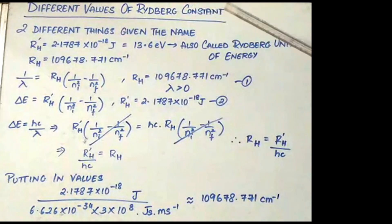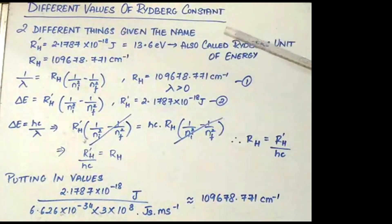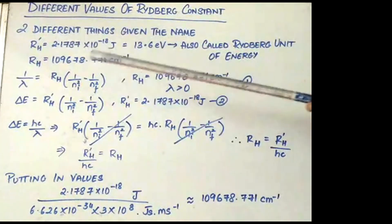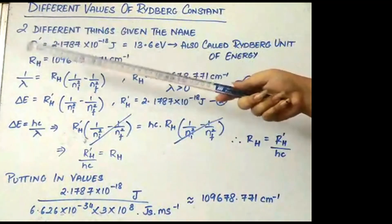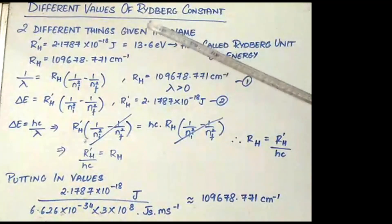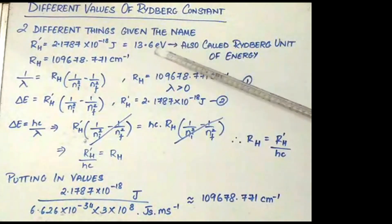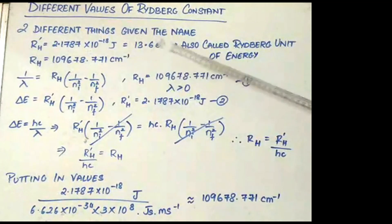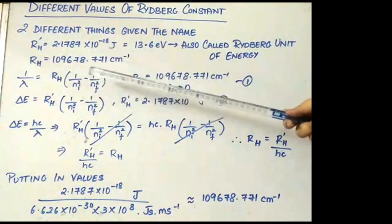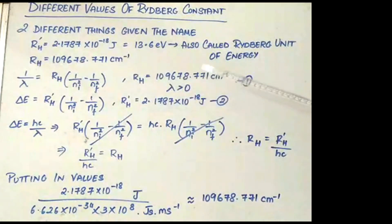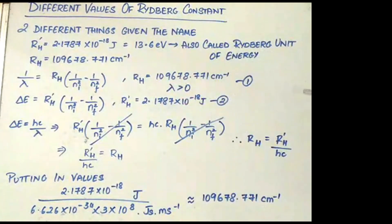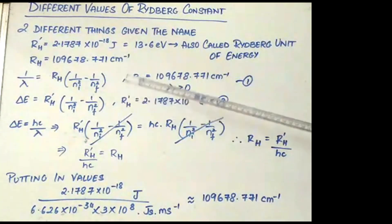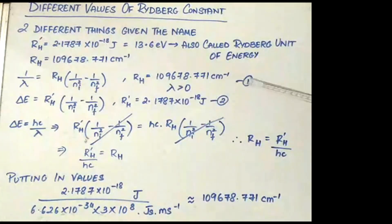In the previous topics we observed two different values of Rydberg constant — two different things given the same name. To avoid confusion, let's call them R_H-dash and R_H. R_H-dash is equal to 2.1787 × 10⁻¹⁸ joules, which is also equal to 13.6 electron volts, and is called the Rydberg unit of energy. R_H is equal to 109678.771 centimeter inverse. So 1/λ equals R_H × (1/N1² minus 1/N_f²), where R_H equals 109678.771 cm⁻¹ — this is equation 1. Delta E equals R_H-dash × (1/N1² minus 1/N_f²), where R_H-dash equals 2.1787 × 10⁻¹⁸ joules — this is equation 2.